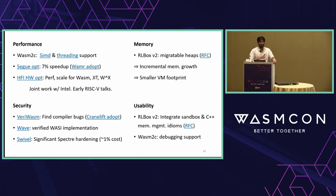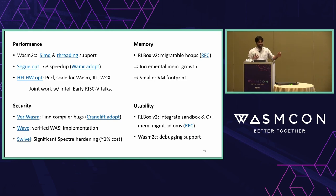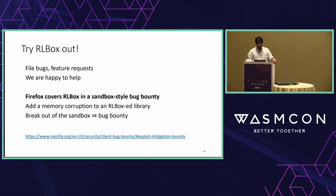On the usability front in RLBox V2, we can make things even simpler — less boilerplate, more auto-marshaling, integration with C++ memory management paradigms like unique pointers, and support for C++ libraries not just C libraries. We're also working on getting WebAssembly debugging support onto production compiler toolchains like WASM2C. It's all open source, and Firefox even has a bug bounty — you can plant a buffer overflow anywhere in one of the sandboxed libraries and try to break out of the sandbox.